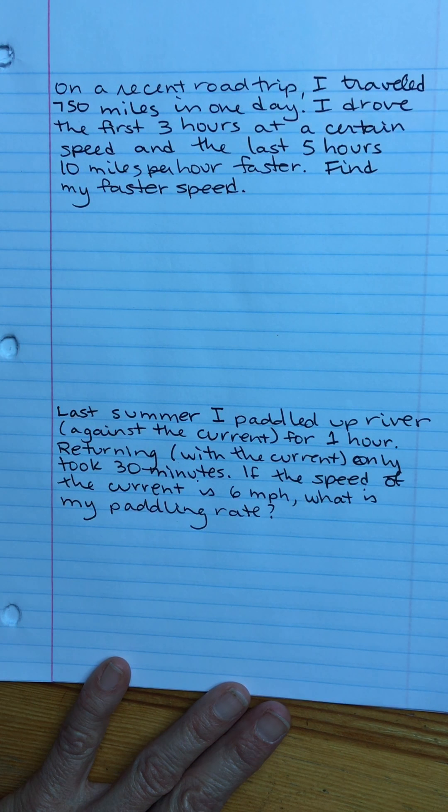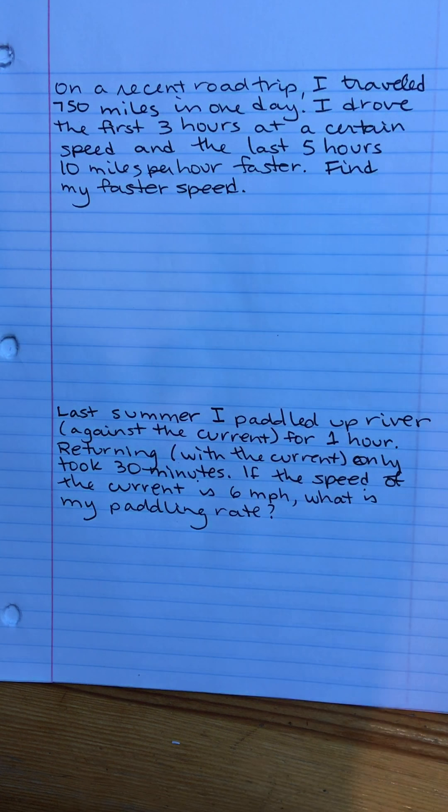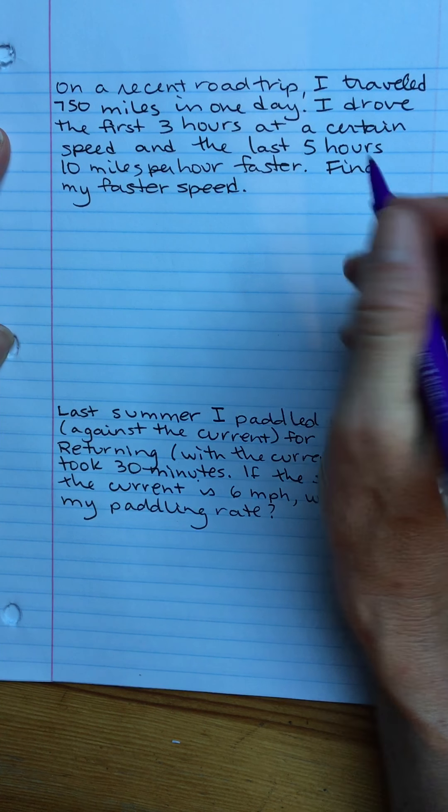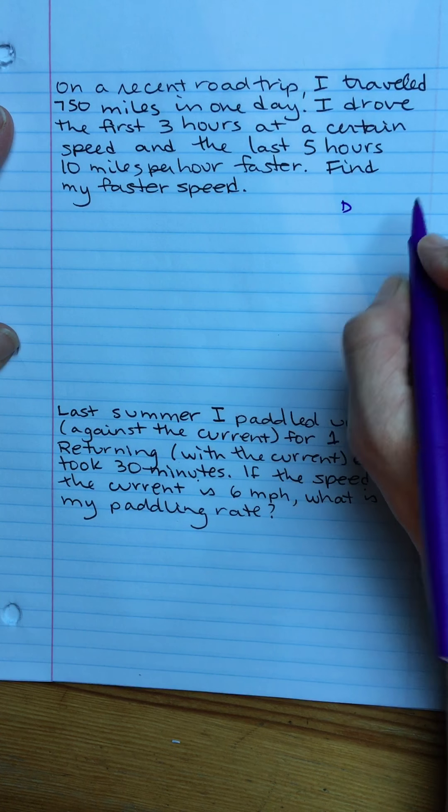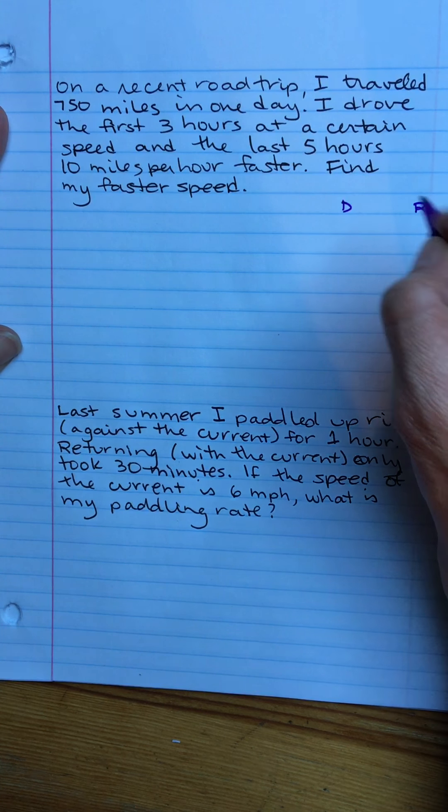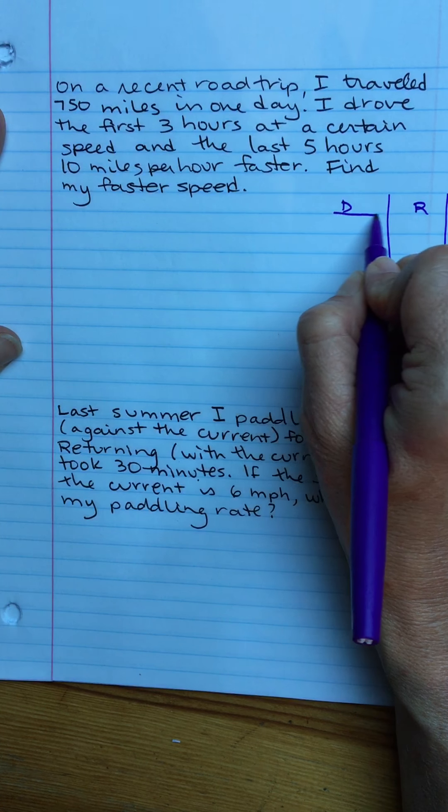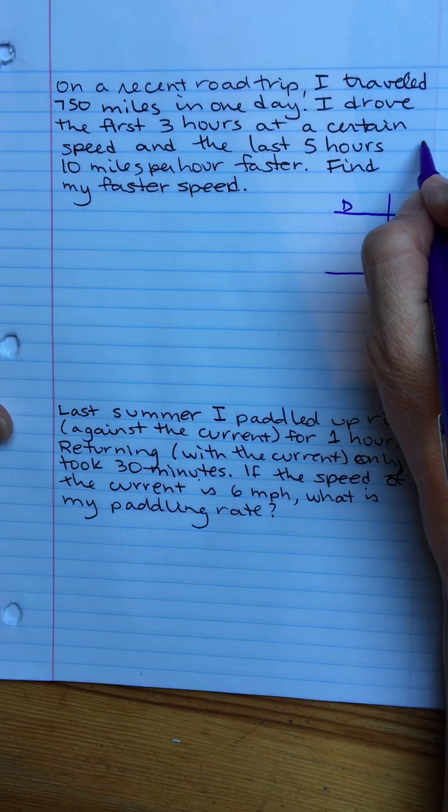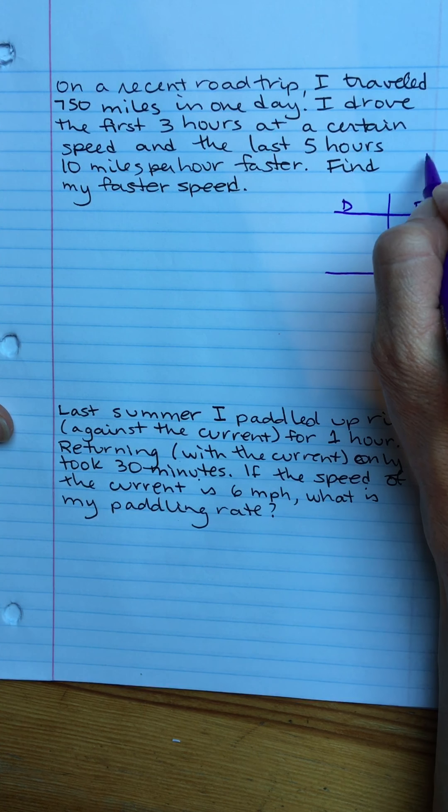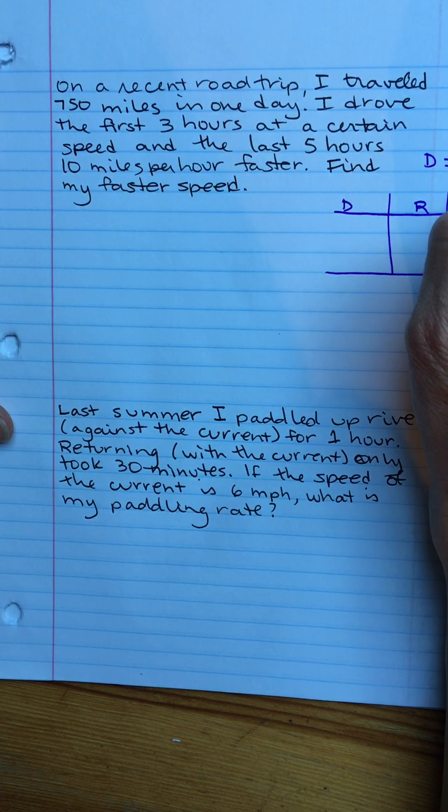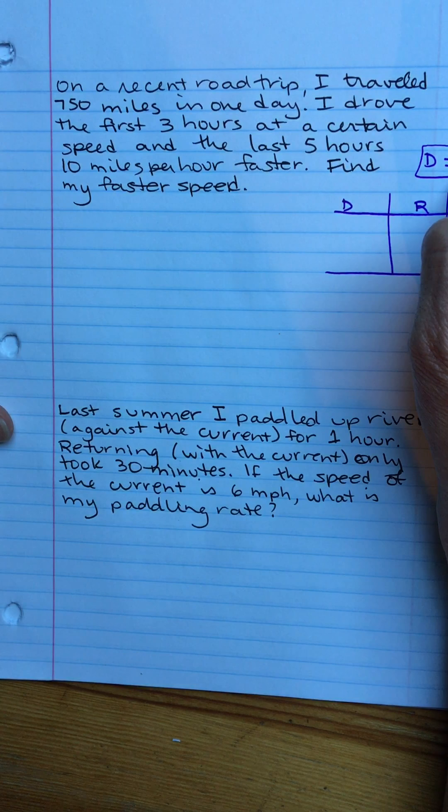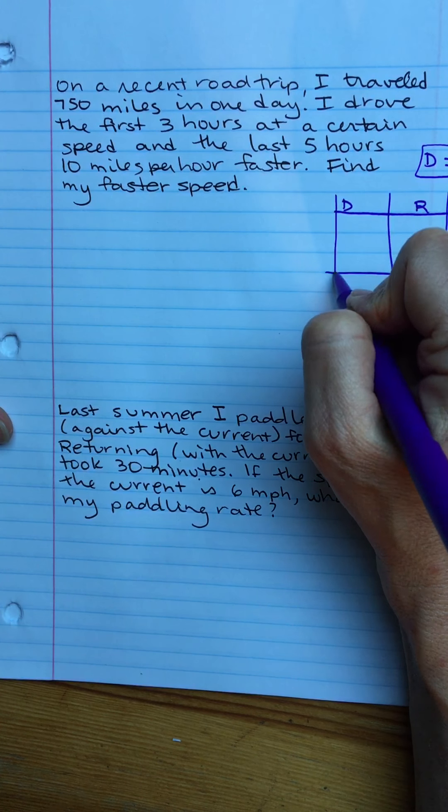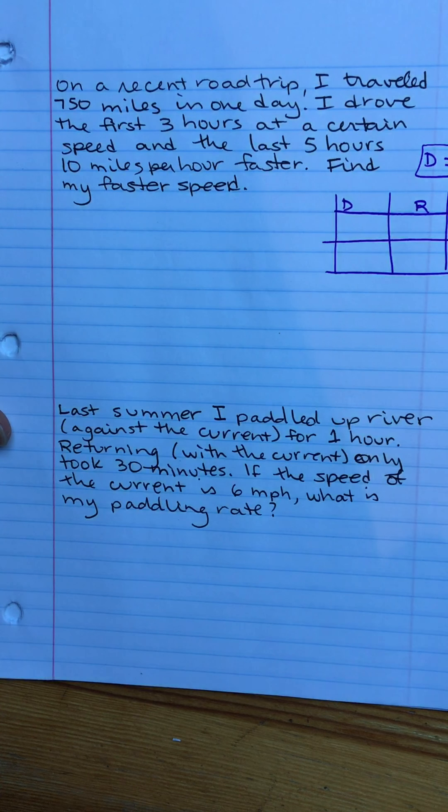Whenever I have to do these types of questions I always use a table. It just helps me keep everything straight. So the table that I want looks like this: D, R, and T. And the equation is distance equals rate times time. Super important. Rate is another word for speed. Now I'm going to reread my question and fill in the six cells of my table.